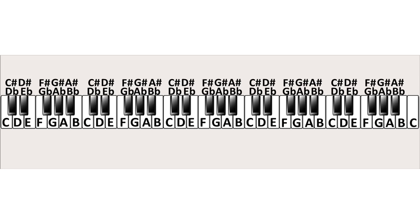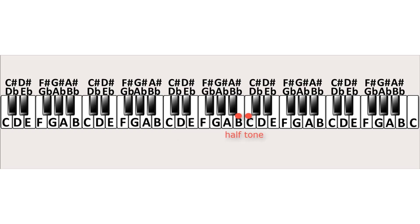Before going to the scales you need to know a few things about intervals. An interval is the distance between two different notes. The easiest interval is between two consecutive notes, like for example between C and C-sharp or D-flat. This is the smallest interval and is called a halftone interval, or simply a halftone. From C-sharp or D-flat to D is also a halftone. You see that between E and F there's no black note, so from E to F is also a halftone. From B to C is also a halftone.